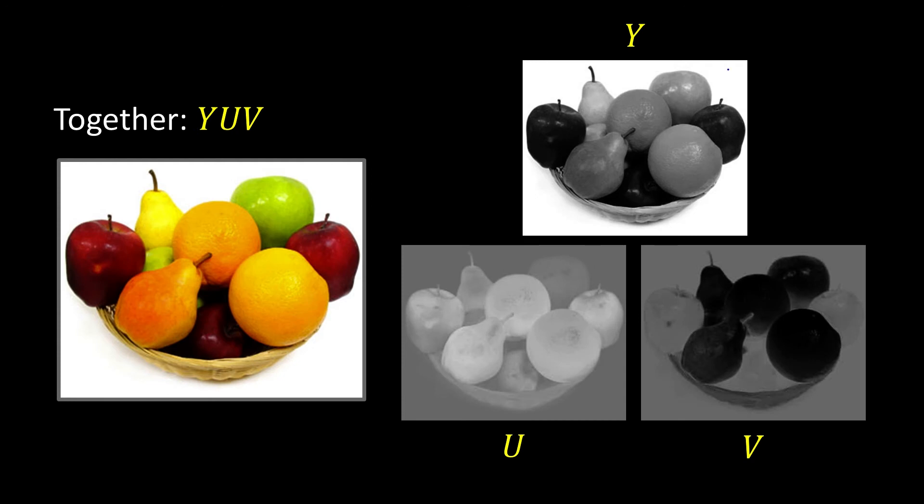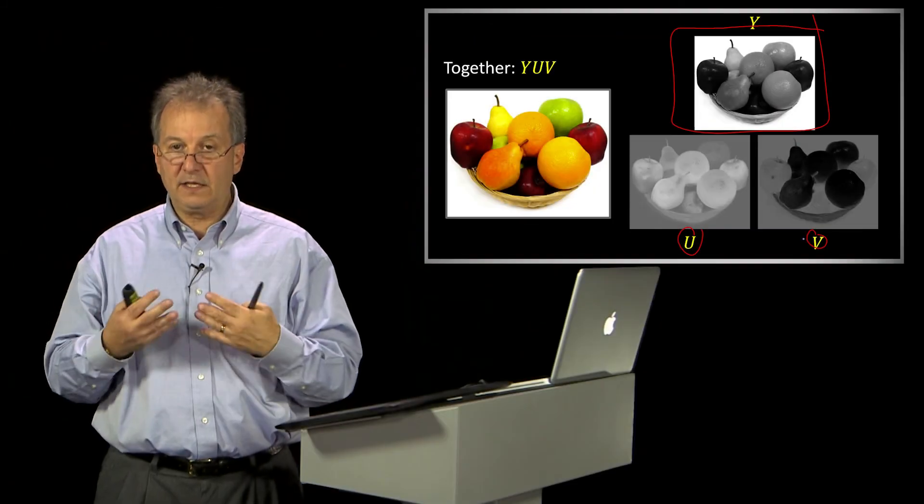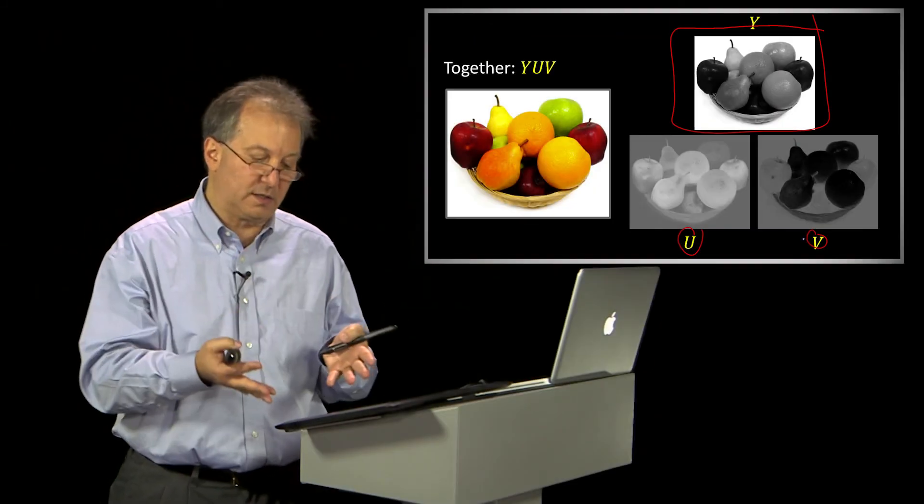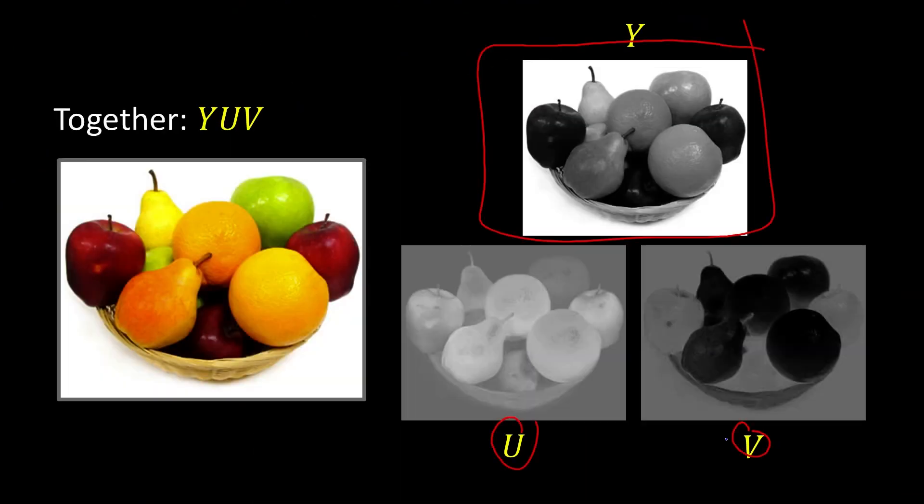So the Y image is exactly what you're used to seeing in your black and white television. But your U image and your V image, those contain the color elements. Now you might ask, why aren't they in color? Because each one of them is a single channel. So that's the U. So the brighter it is, the higher U, the lower it is, the less U. Same thing with V.